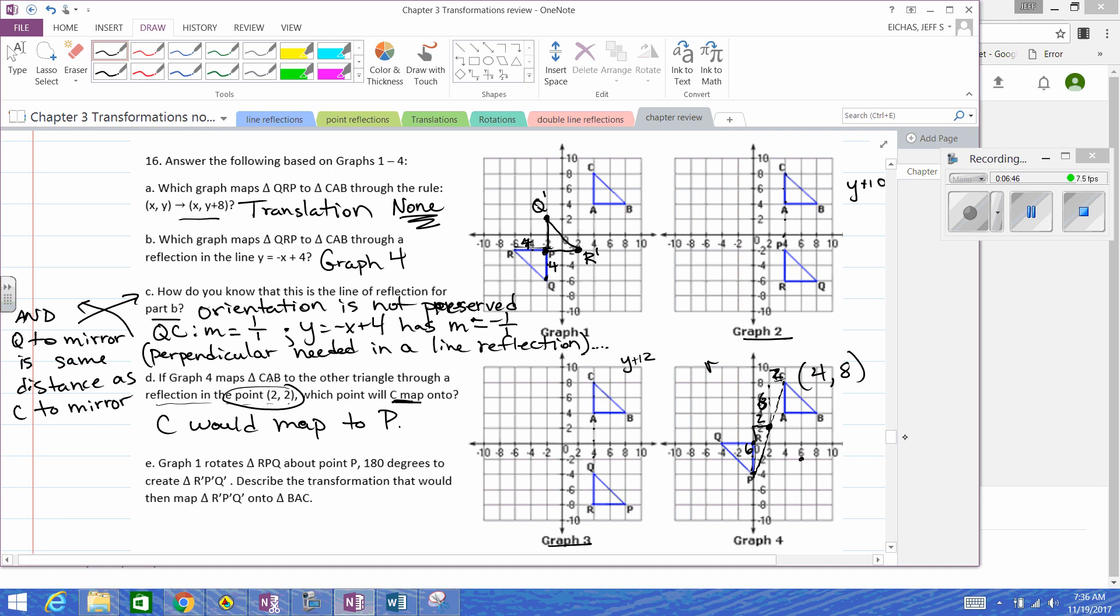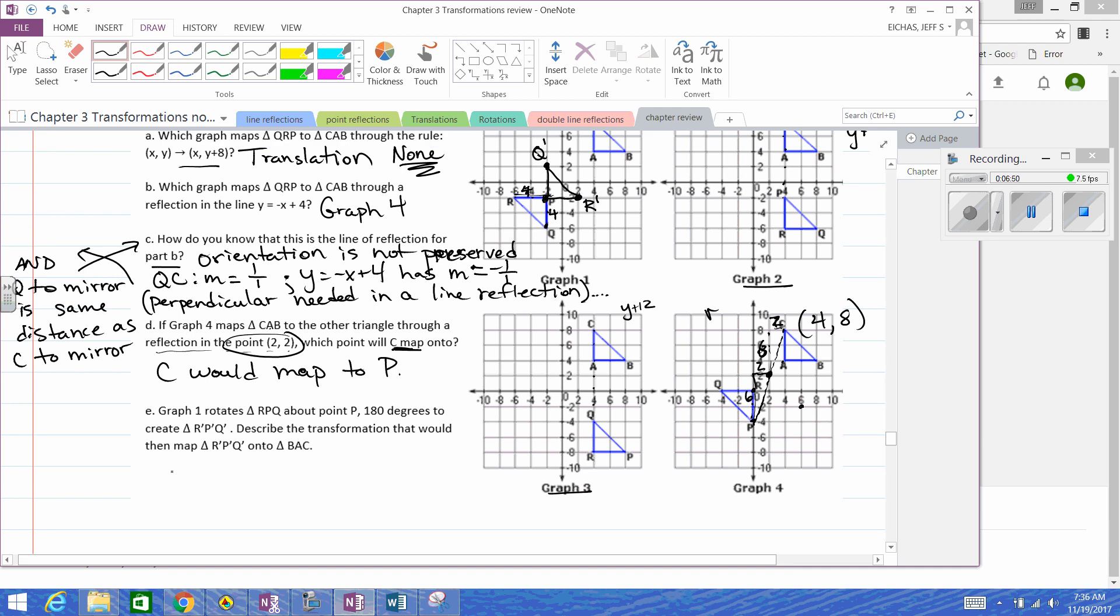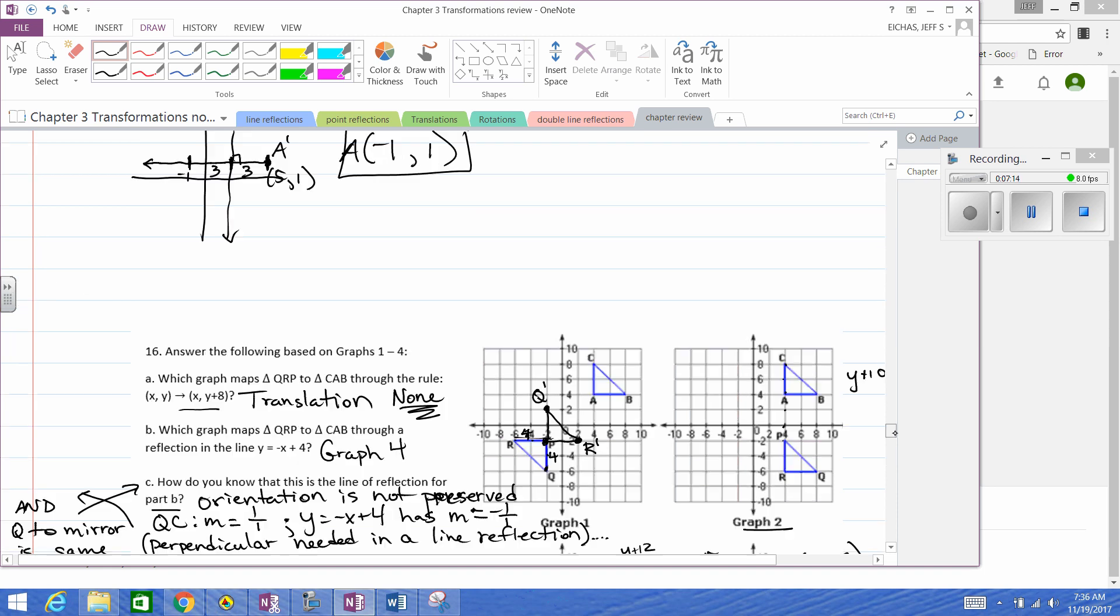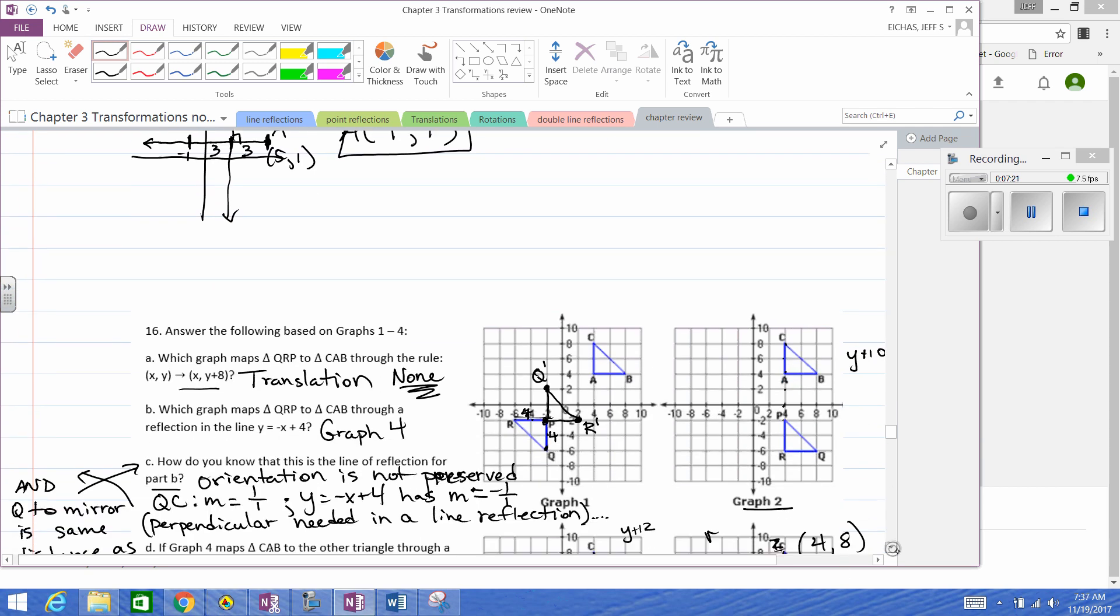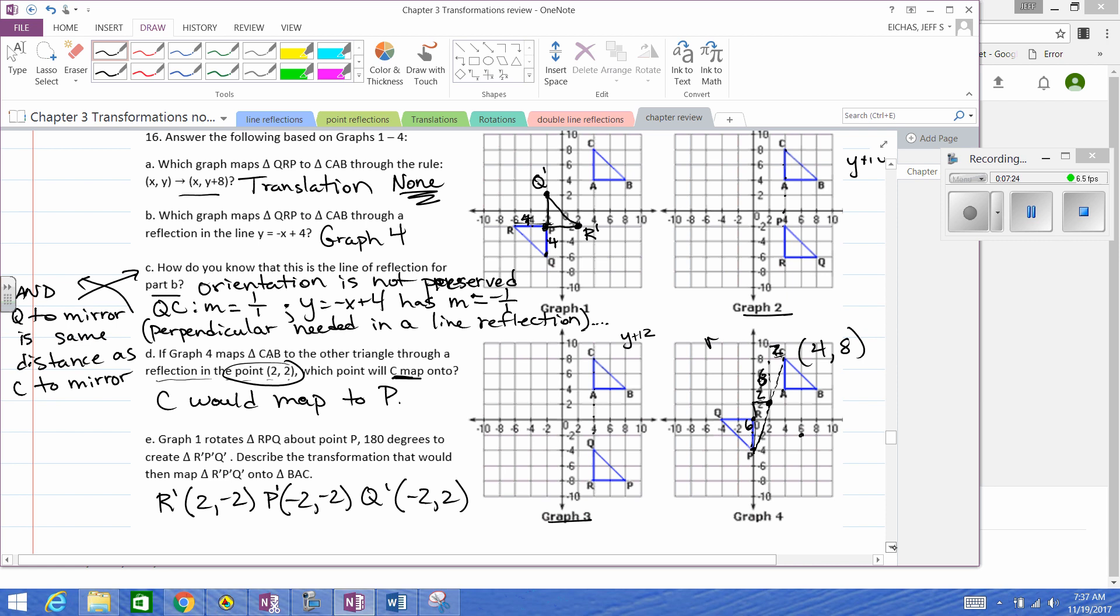Let's list that. R prime is going to be two, negative two. P prime stayed the same at negative two, negative two. And Q prime moved up to negative two, two. Okay, describe the transformation that would finish it off. We'd have to translate. Let's get R prime to B. It's going to be two, four, six this way, two, four, six that way. So then we'd have to translate right six, up six.